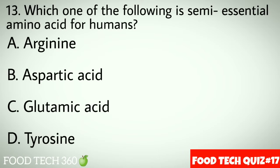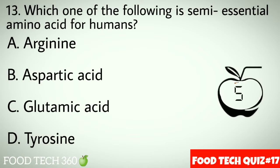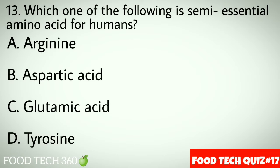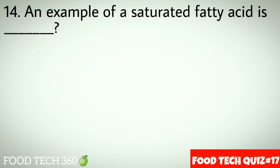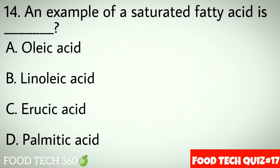Question number 13: Which of the following is a semi-essential amino acid for humans? Options: A. Arginine, B. Aspartic acid, C. Glutamic acid, D. Tyrosine. Correct answer: A. Arginine.